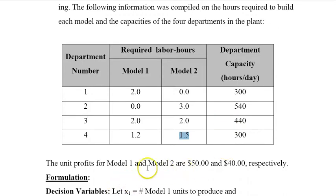Model one gives me a unit profit of fifty dollars, model two gives me forty dollars profit. So how many model one snowmobiles and model two snowmobiles should I produce to maximize my profit?